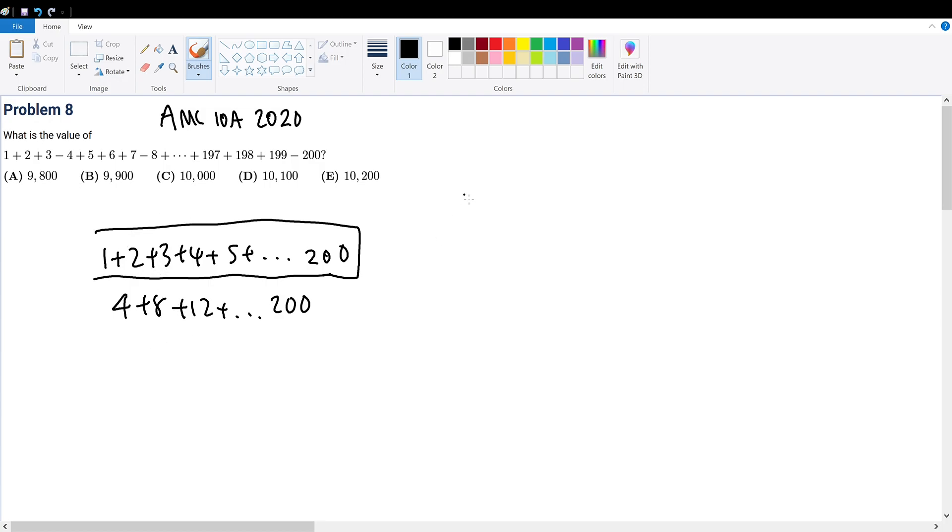So to those who don't understand what I just said, 1 plus 2 plus 3 minus 4 plus 5 plus 6 plus 7 minus 8 all the way to minus 200. What we just did was we added 4 plus 8 plus all the multiples up to 200.